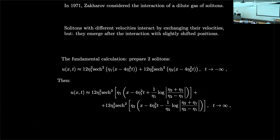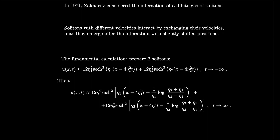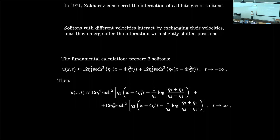Some history: solitons were really discovered in the 1840s, then put on a mathematically firm base in the 1880s by Korteweg and de Vries. They went dormant until the 1960s, when it was realized that there are equations which have many soliton solutions.